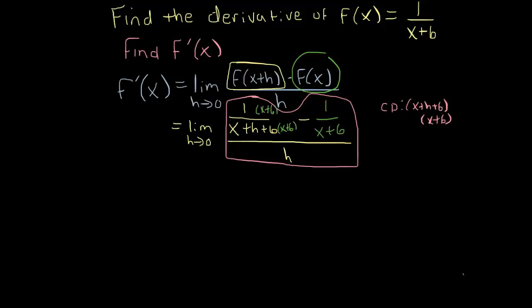And so this denominator is missing x+h+6, so I'll multiply the top and the bottom by that. And so this becomes, my denominator is going to be (x+h+6)(x+6). There's my common denominator.